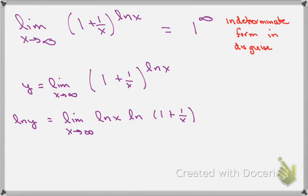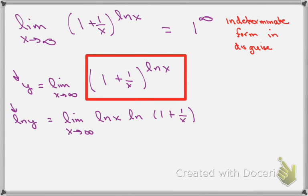What we're going to do is some algebra steps to get that into the form of a ratio. We'll write the whole limit expression as y, and then our trick is to take the natural log of y, which means taking the natural log of the right-hand side. That brings the exponent down, so we end up with the natural log of x times the natural log of (1 + 1/x).